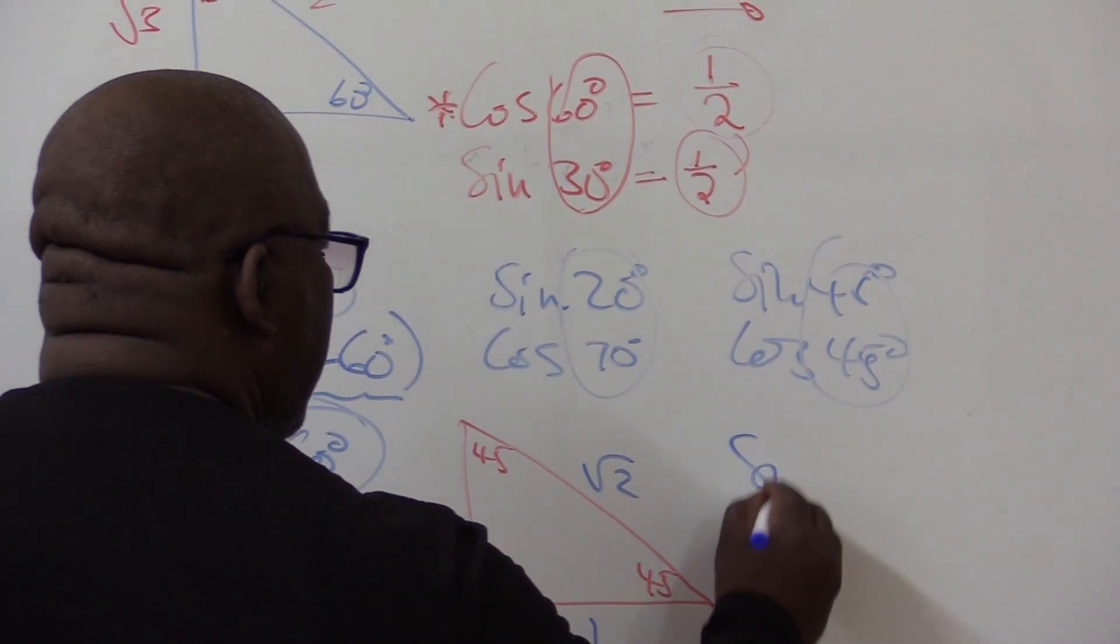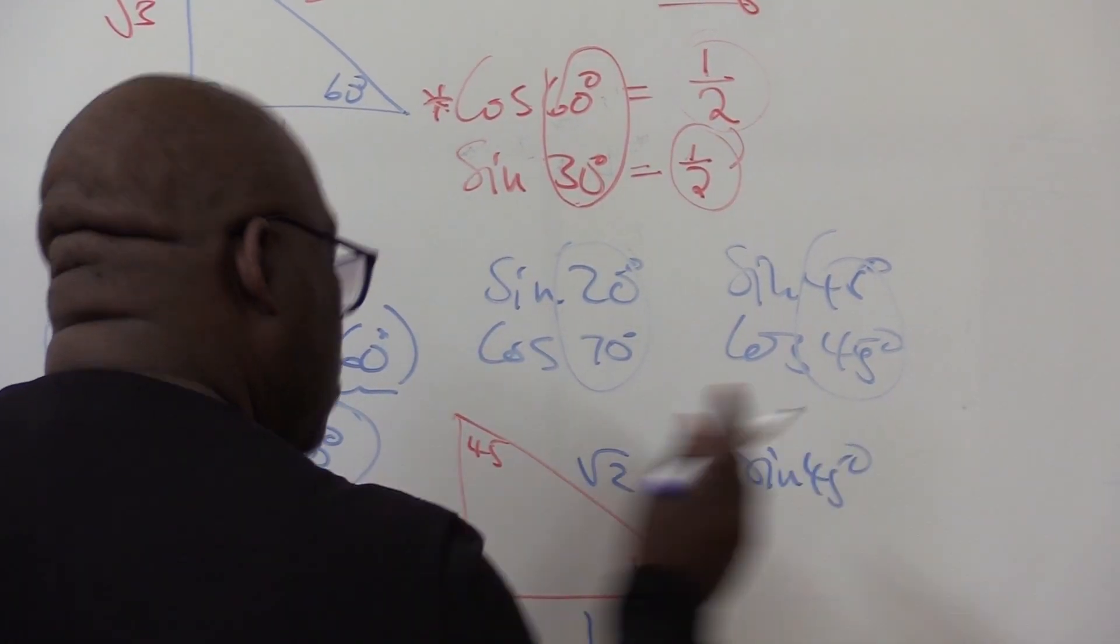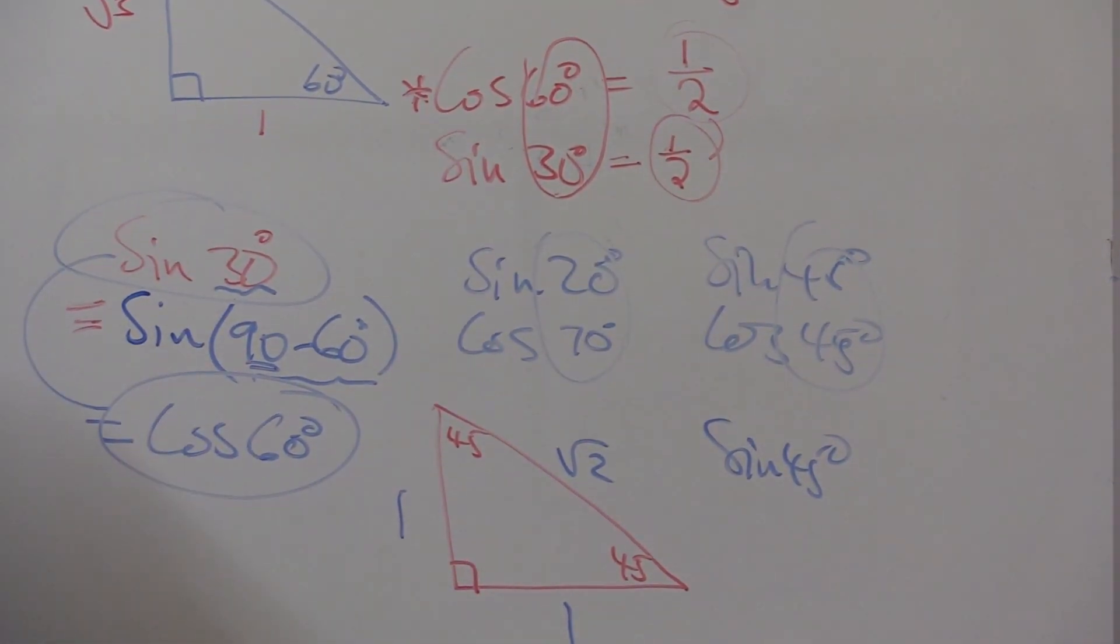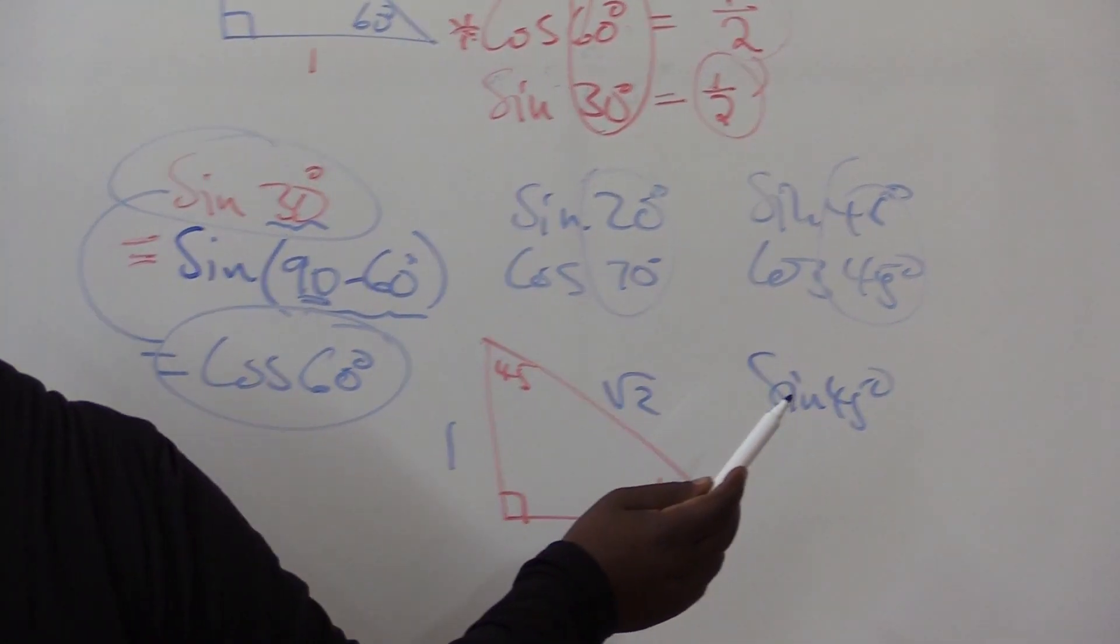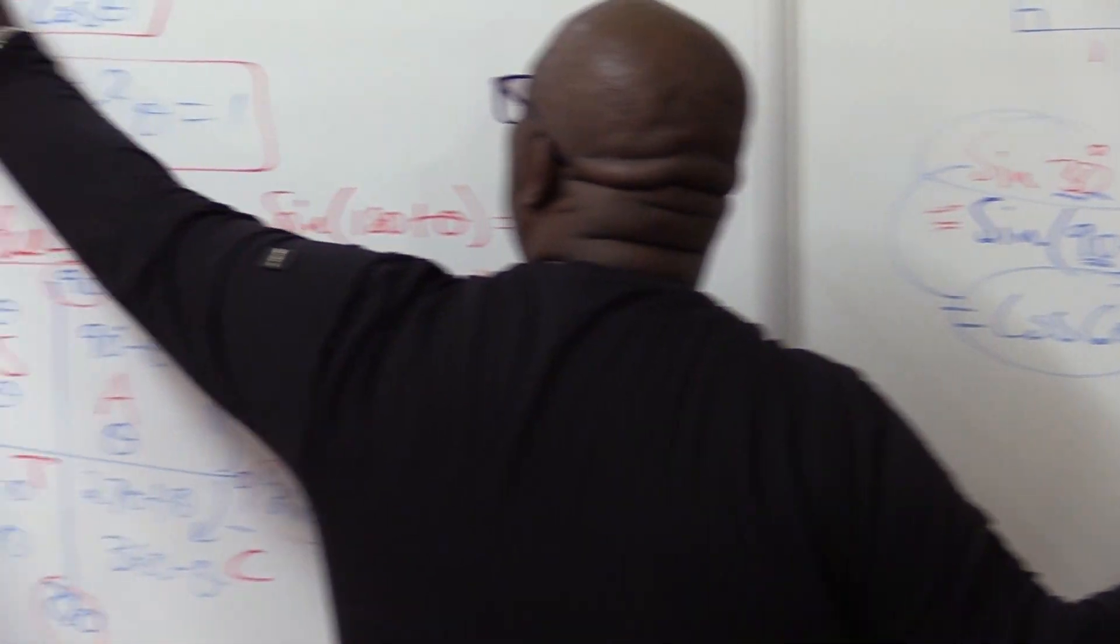So if we are looking for sine 45 degrees, this is what you use, not a calculator. Can you use this 45 or that 45? Remember the definition of sine: it is opposite over hypotenuse.